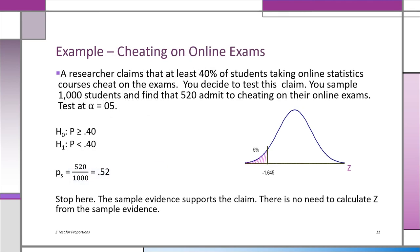Suppose a researcher claims that at least 40% of students taking online statistics courses cheat on the exams. You sample 1,000 students and find that 520 out of 1,000 admit to cheating. We test at alpha of 0.05. HO is P greater than or equal to 0.40. H1 is P less than 0.40. This is a one-tailed test because the claim was 'at least,' and the rejection region is on the left.